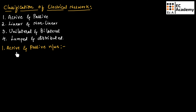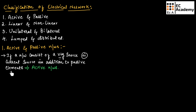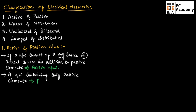First, let us understand what is active and passive networks. If a network consists of a voltage source or current source in addition to passive elements, such type of network is known as an active network. A network containing only passive elements is known as a passive network.